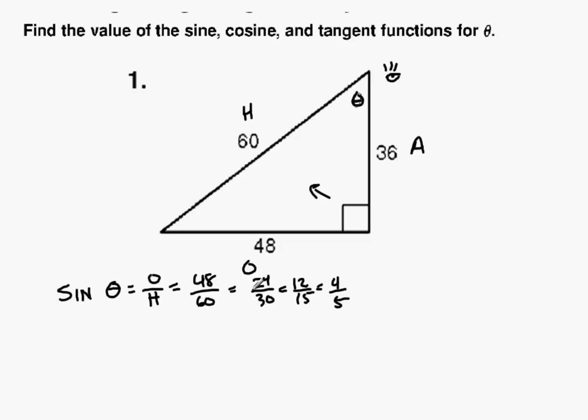So that would be your answer for sine. Cosine theta is adjacent over hypotenuse. So that's going to be 36 over 60. If I go half with that, that's going to be 18 over 30, and that becomes 9 over 15, and that becomes 3 over 5.